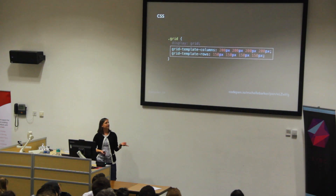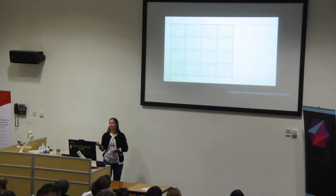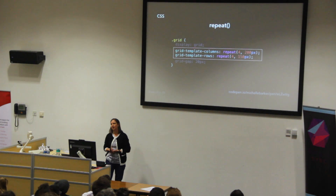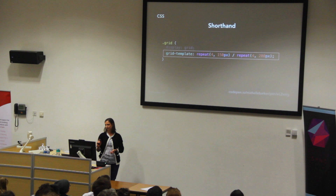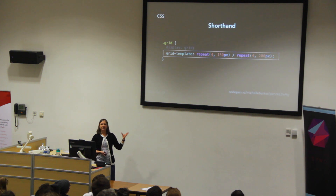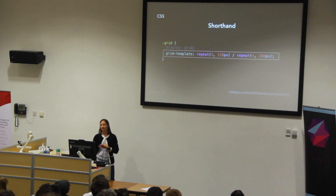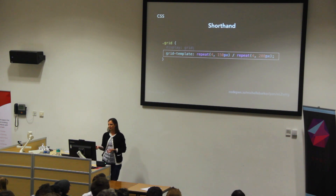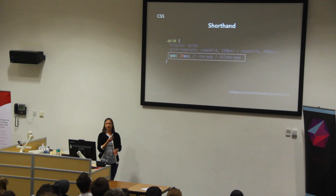If we jump back to our code you can see there's quite a lot of repetition in our grid-template-columns and grid-template-rows properties. We can make that more concise using the repeat function, which takes two arguments: the number of tracks and the size of those tracks — so four tracks on the column axis at 200 pixels, and four tracks on the row axis at 150 pixels. We could also use the shorthand grid-template for grid-template-rows and grid-template-columns, though I prefer not to use shorthand too often since those declarations can get quite long. And we can use gap as the shorthand for row-gap and column-gap — because it's the same in both directions here, we just need one value.